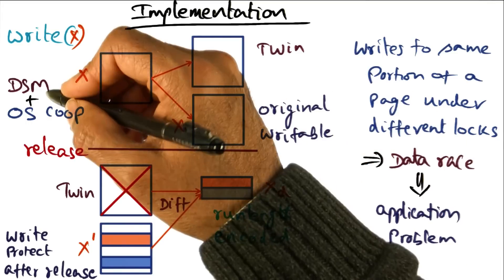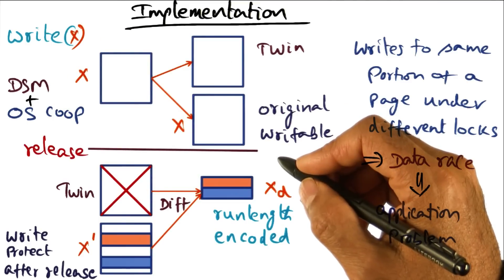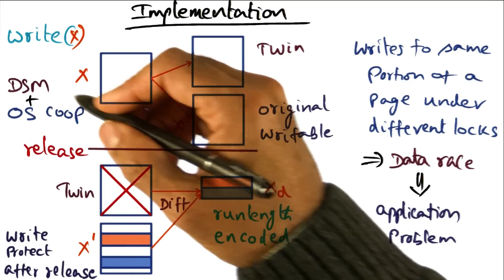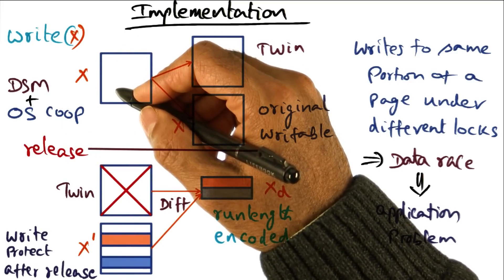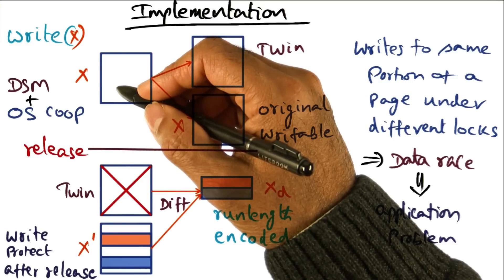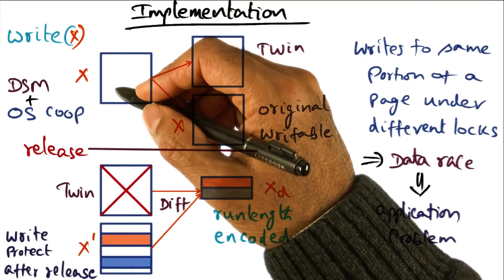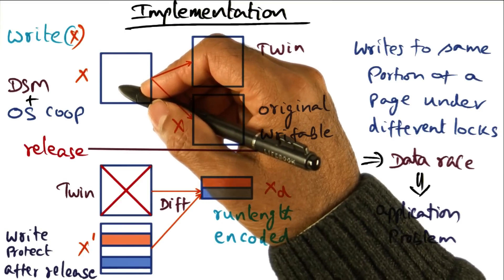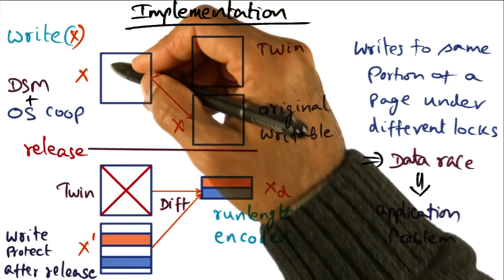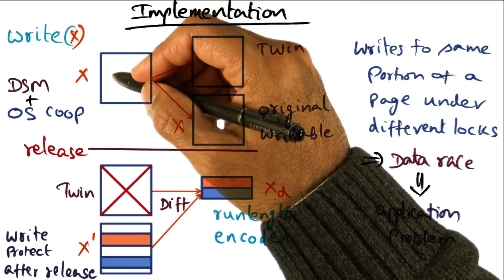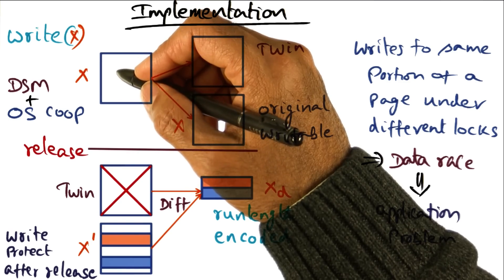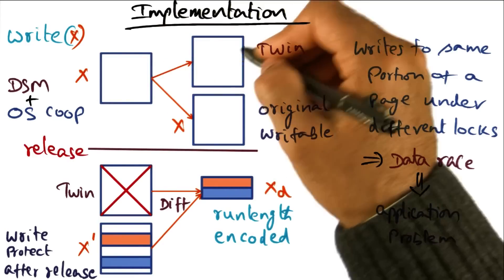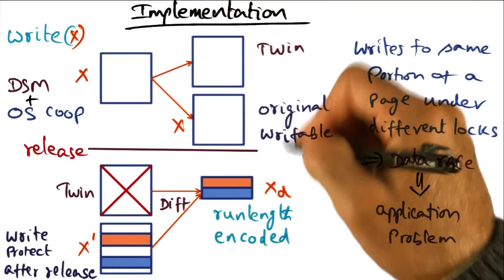At that point, the DSM software gets into gear, contacts the owner of the page, and checks the status of the page. If the page is invalid, it gets the page and the diffs for that page. Once it brings in the contents of the page and the diffs, it creates a current version of the page. If the process is making a read access, there is no problem. But if the process wants to write to the page, at that point it creates a twin and does all the things mentioned.